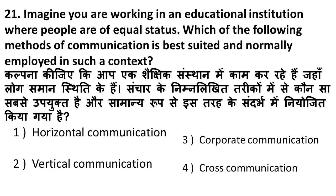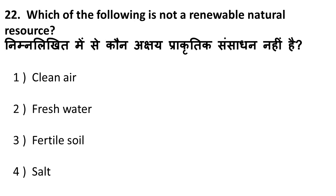Next question: imagine you are working in an educational institute where people are of equal status — which method of communication is best suited? When people of different status exchange messages it is vertical communication. When people of equal status exchange messages it is horizontal communication. Cross communication involves people from completely different backgrounds. In this case, since people are of equal status, the correct answer is horizontal communication.